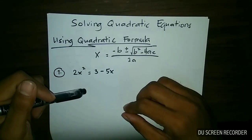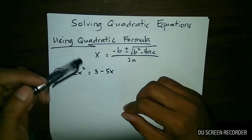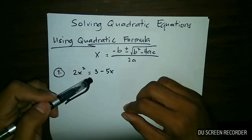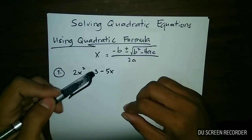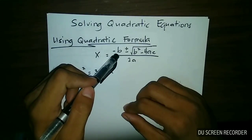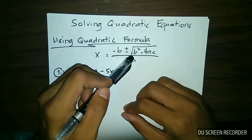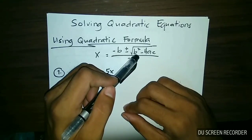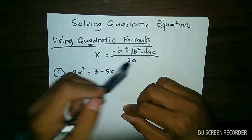Good evening. In this video, we will solve quadratic equations using the quadratic formula. Our quadratic formula is x is equal to negative b plus or minus the square root of b squared minus 4ac, all over 2a.